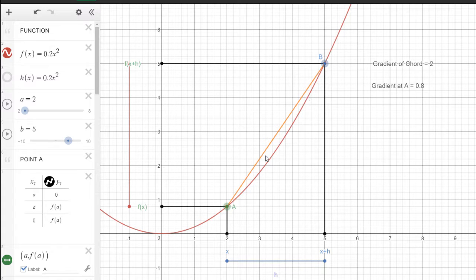So I've worked out the gradient of that chord there. The chord is in orange. So the gradient of chord is equal to 2. Okay, so what I can do then is I've also taken a note of the actual gradient of that point A. So the actual gradient of that point A is equal to 0.8.